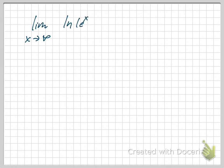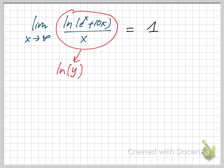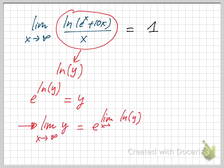As a reminder, we found the limit of ln(y) equals 1. Since y = e^(ln(y)), to find the limit of y as x goes to infinity, we take e raised to the limit of ln(y). Since the limit of ln(y) is 1, the limit of y is e^1, which is e.